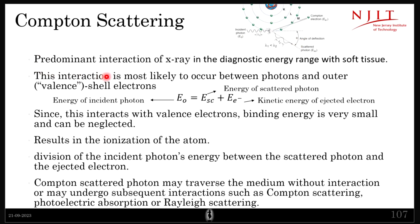Compton scattering is highly probable — it is the predominant interaction of x-ray in the diagnostic energy range with soft tissue, so we cannot avoid it. It is therefore very important to understand the ionization energy and how many electrons will be ionized on average in the body.